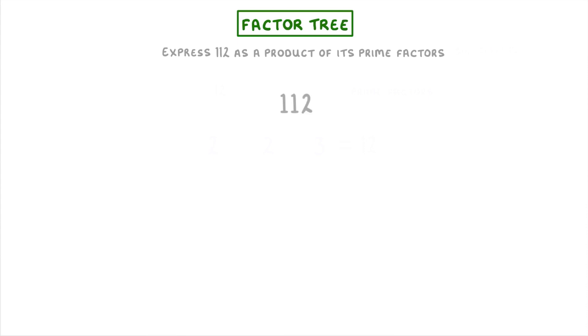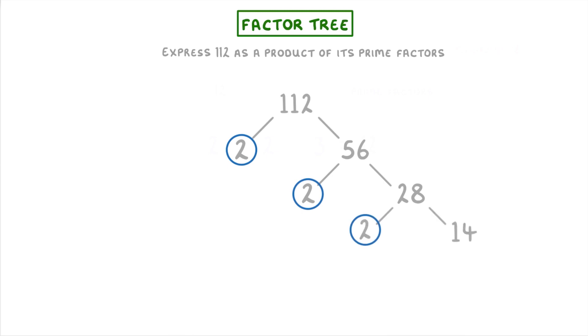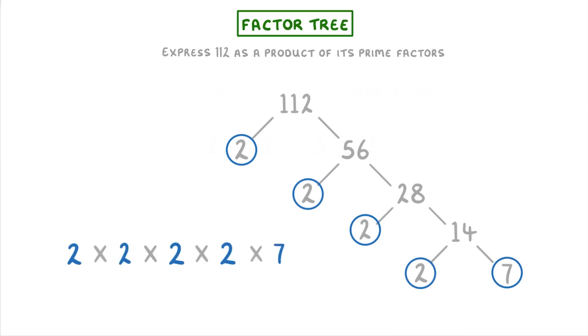Let's try one more, where we're asked to express 112 as a product of its prime factors. The word 'express' basically just means write or show, so we're doing exactly the same thing as in the previous questions. To start, we put 112 at the top and then split it into a factor pair. The easiest pair, if it's an even number, will generally be 2 and whatever else you need — in this case, 56. So we circle the 2, then split 56 into 2 and 28, then 28 into 2 and 14, and finally 14 into 2 and 7. So we can express 112 as 2 times 2 times 2 times 2 times 7, and rewrite it as 2 to the power of 4 times 7.